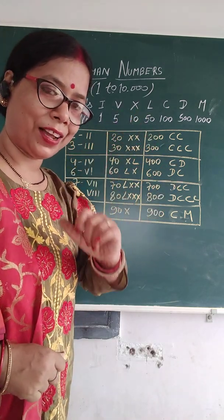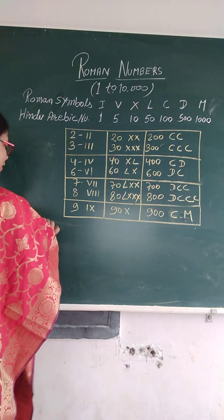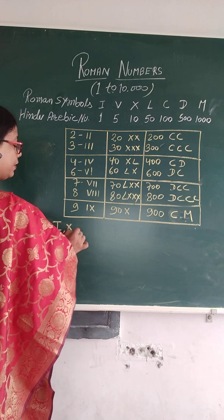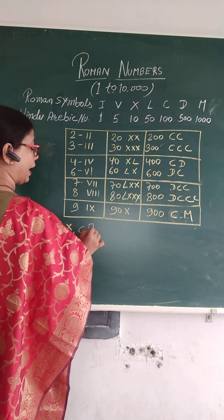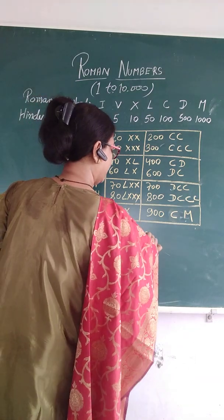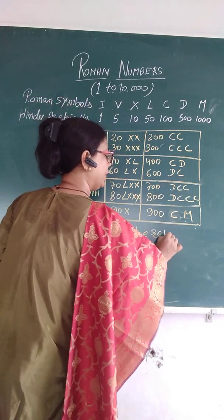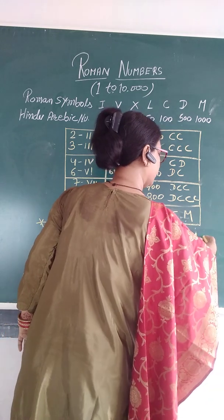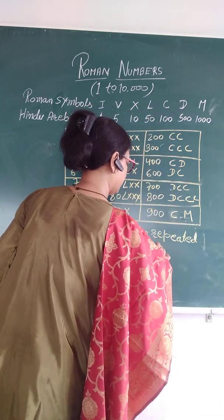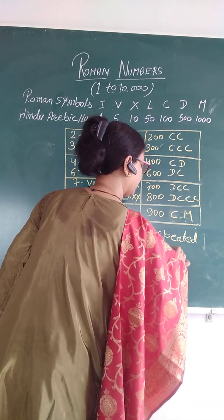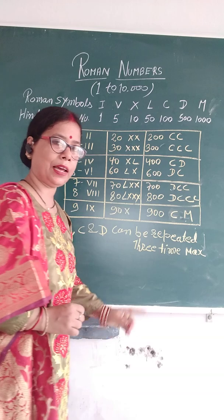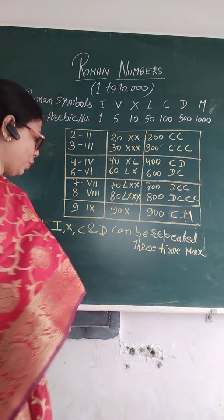Now, uske baad do baatein aur yaad karni hai. First: I, X, and C can be repeated three times maximum — three times maximum, not four times, only three times.